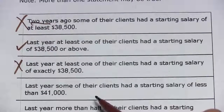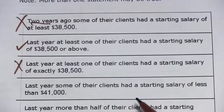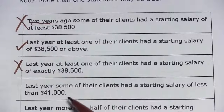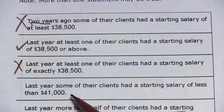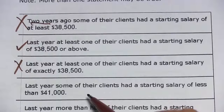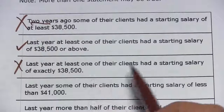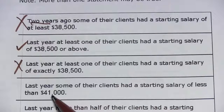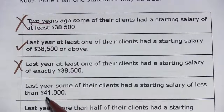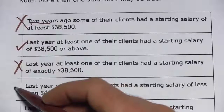The next one says: last year some of their clients had a starting salary of less than $41,000. Remember, the two ways to get an average of $38,500 are: everybody has $38,500, meaning they would be below $41,000; or some are above $38,500 and some are below $38,500, which means somebody would be below $41,000. So this one has to be true.